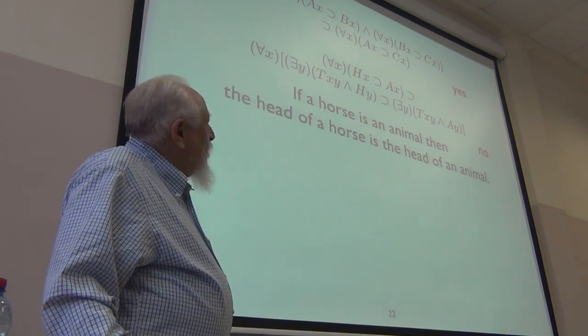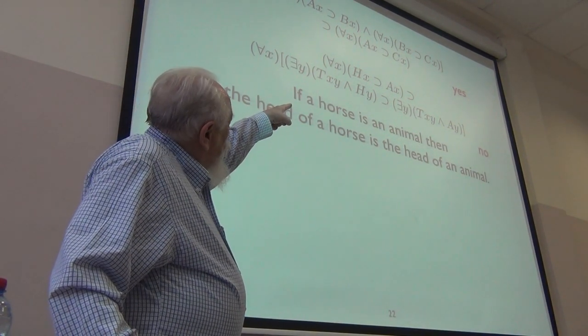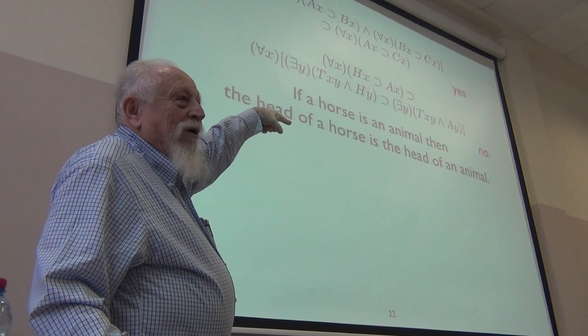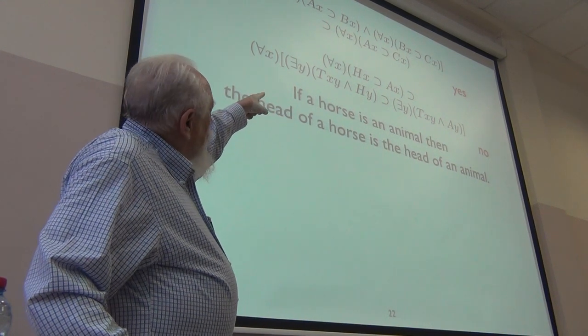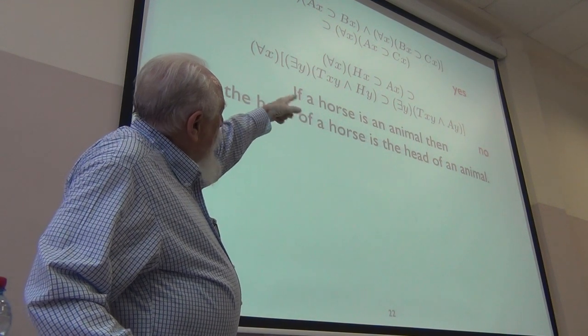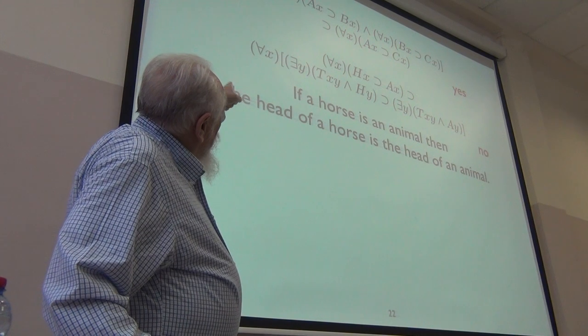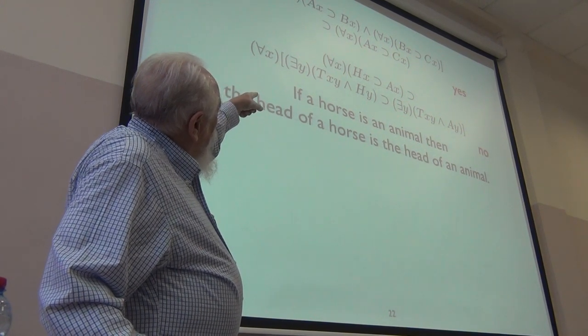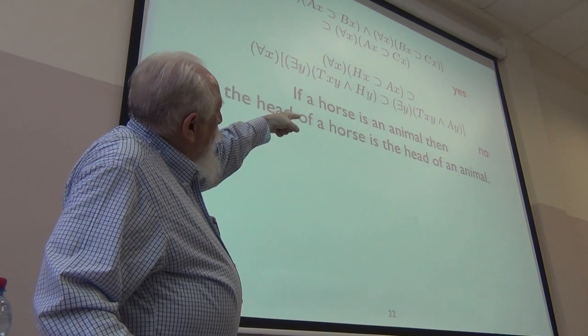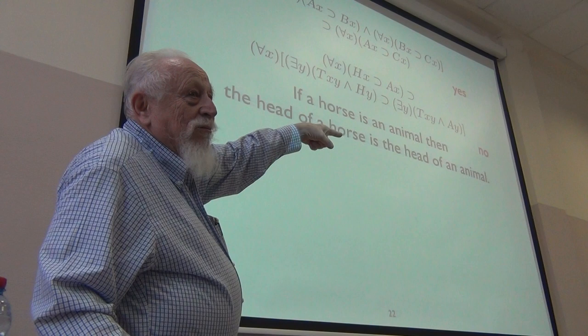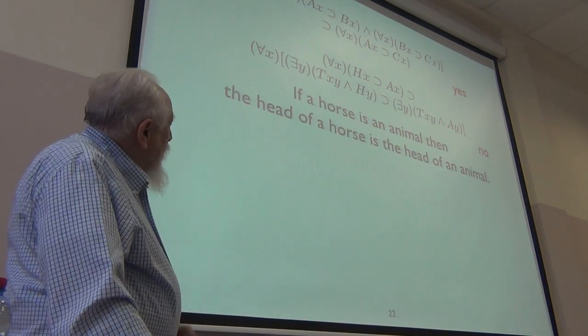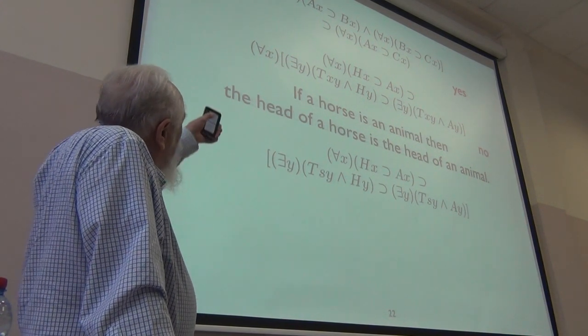Anyway, let's see, this one, all As are Bs, all Bs are Cs, implies all As are Cs. That's provable. This one, which is a little more horrendous, it's a version of if a horse is an animal, then the head of a horse is the head of an animal. H is head, A is animal and T of xy is x is on top of y and x is the head of y. So, if for all x, x is a horse implies x is an animal, so if all horses are animals, then whatever it is you're talking about, if there's something that x is the head of and that something is a horse, then there's something that x is the head of and that something is an animal. Now, this is not provable.